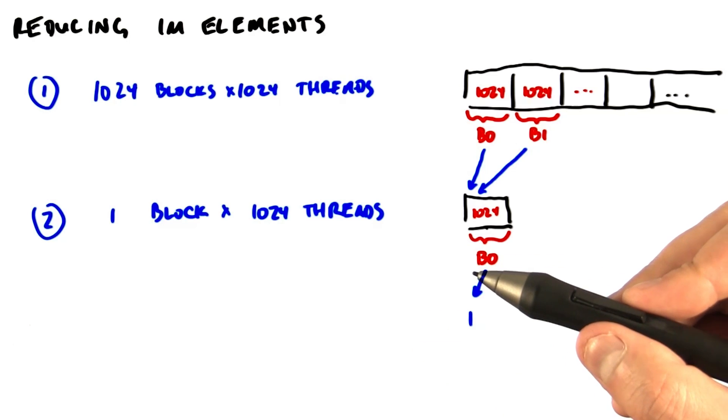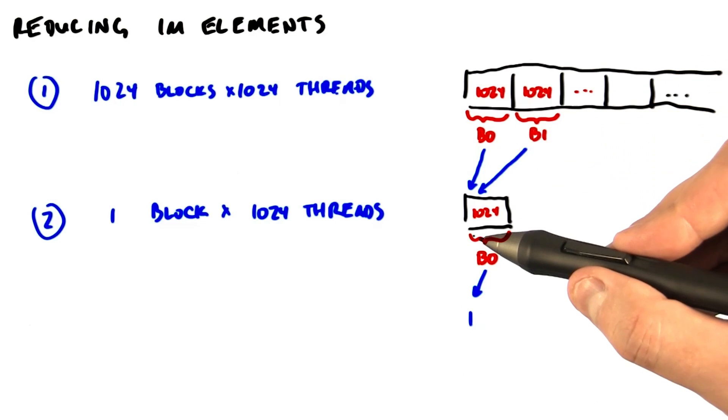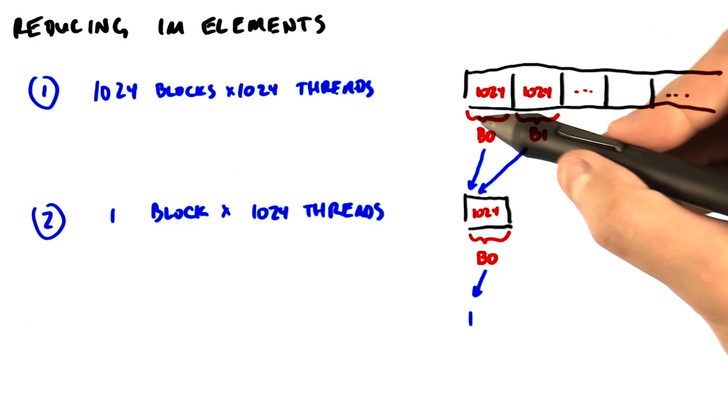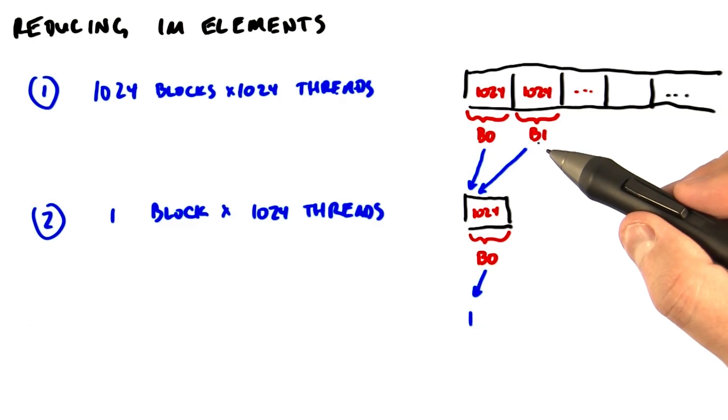In both, we're going to implement a sum of a million, actually 2 to the 20th elements. We're going to do this in two stages. In the first stage, we'll launch 1,024 blocks, each one of which will use 1,024 threads to reduce 1,024 elements.